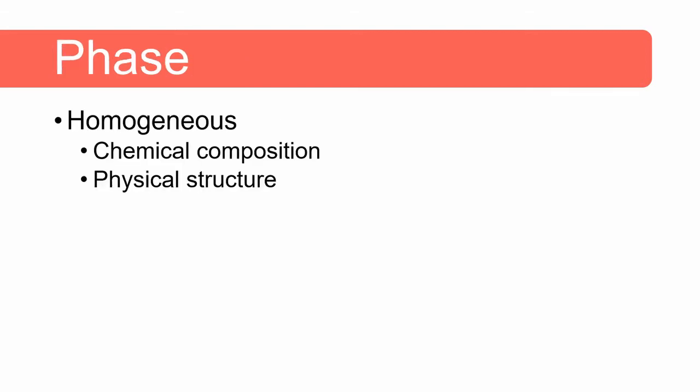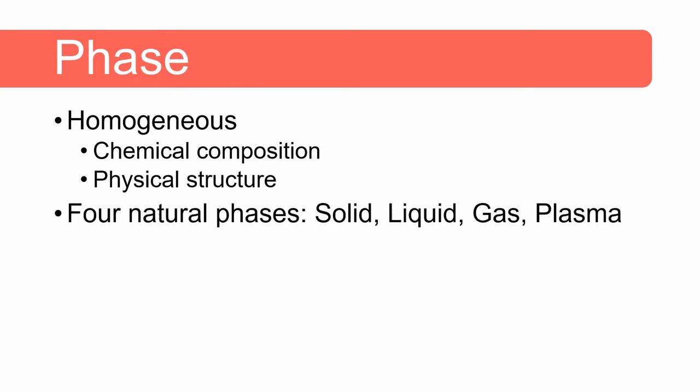So what is a phase? The term phase refers to a quantity of matter that is homogeneous throughout in both chemical composition and physical structure. Homogeneity in physical structure means that the matter is all solid or all liquid or all gas. An oil-water mixture consists of two liquid phases, the water phase and the oil phase, and they are both liquids but their chemical compositions differ. Therefore there are two different liquid phases and the mixture is not homogeneous.